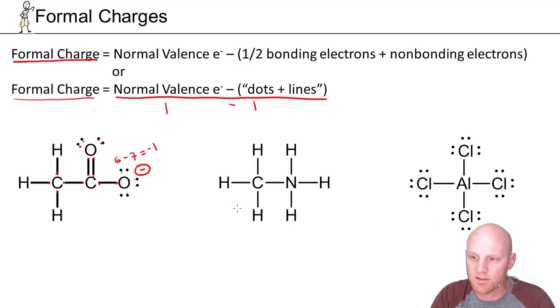So we'll do the same kind of thing here. All the hydrogens have one bond each, and one minus one is zero. No formal charges on any of the hydrogens. Carbon here, four valence electrons, minus one, two, three, four lines and no dots. Four minus four is zero, no formal charge.